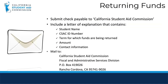Please submit a check made out to the California Student Aid Commission to return funds for the closed academic year. Please include an enclosed letter of explanation that explains the following: the student name, CSAC ID number, term for which funds are being returned, amount, and contact information. Please mail the envelope to California Student Aid Commission, Fiscal and Administrative Services Division, P.O. Box 419026, Rancho Cordova, CA 95741.